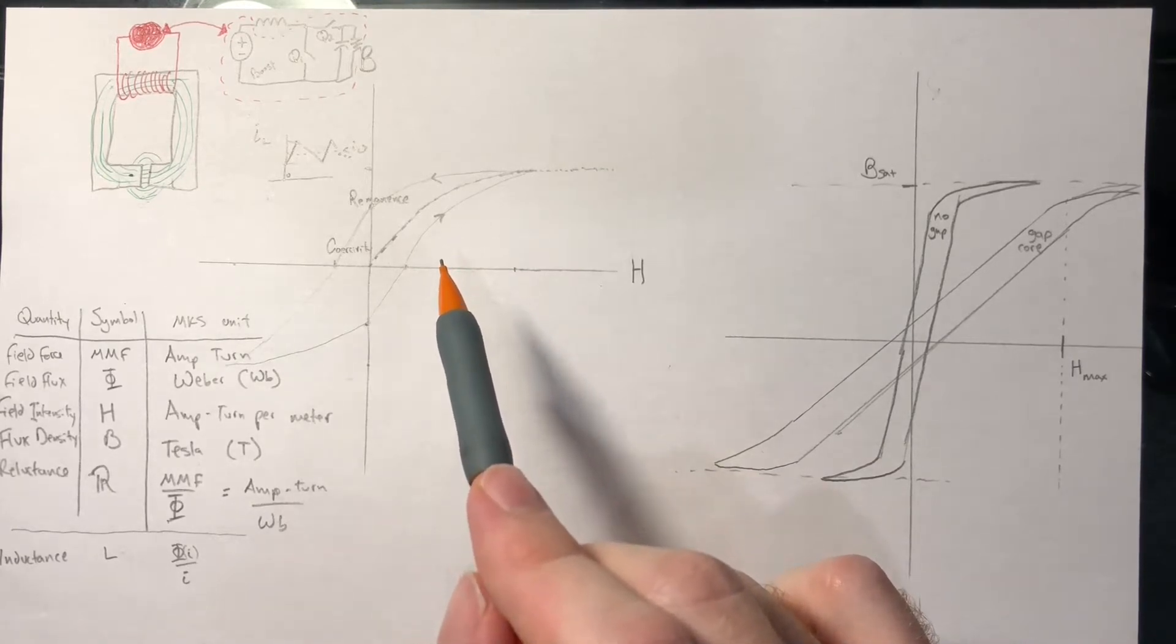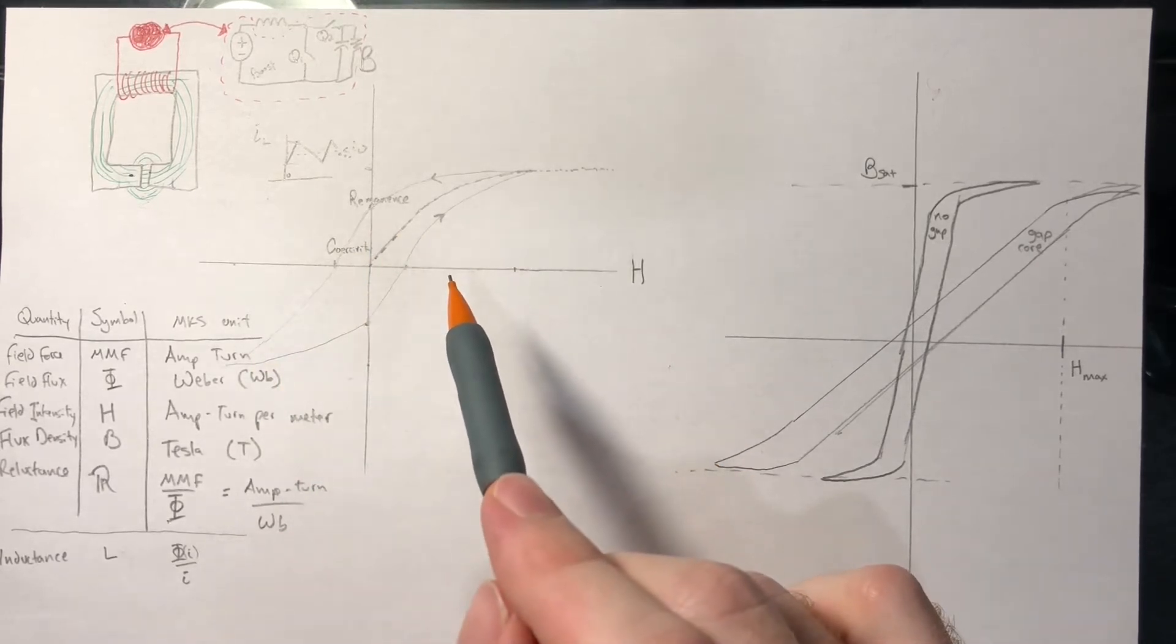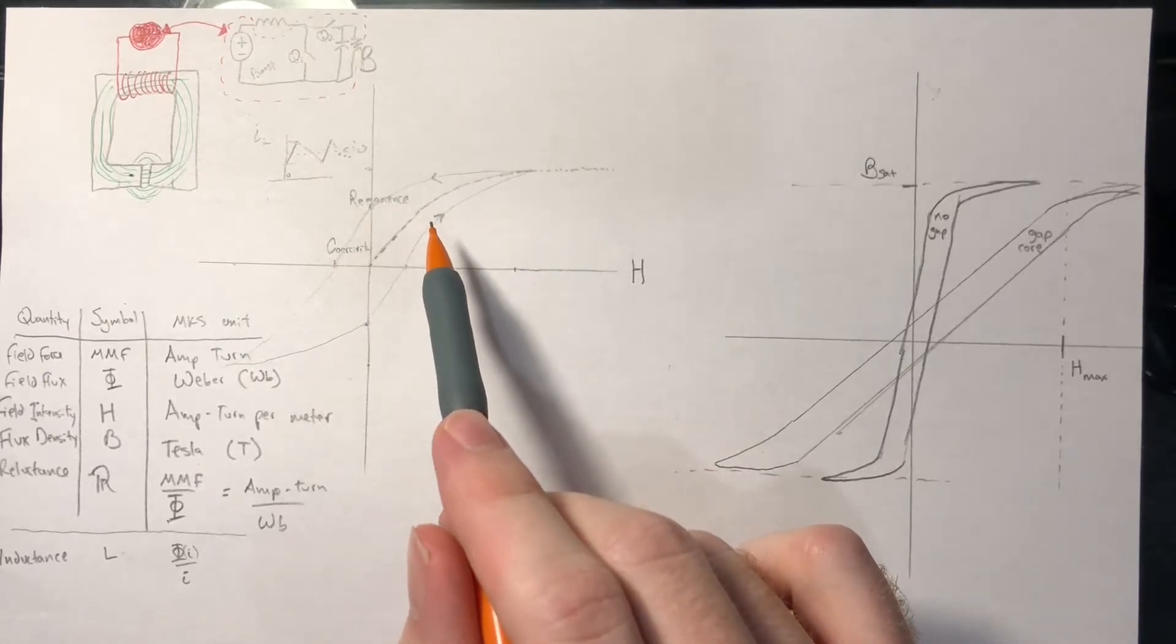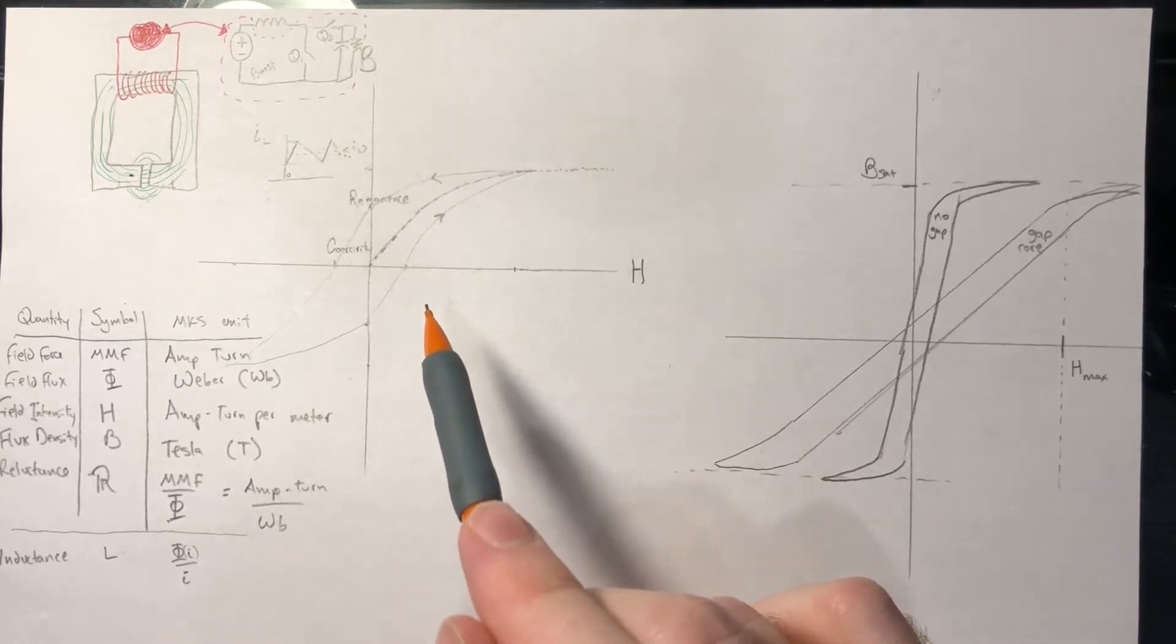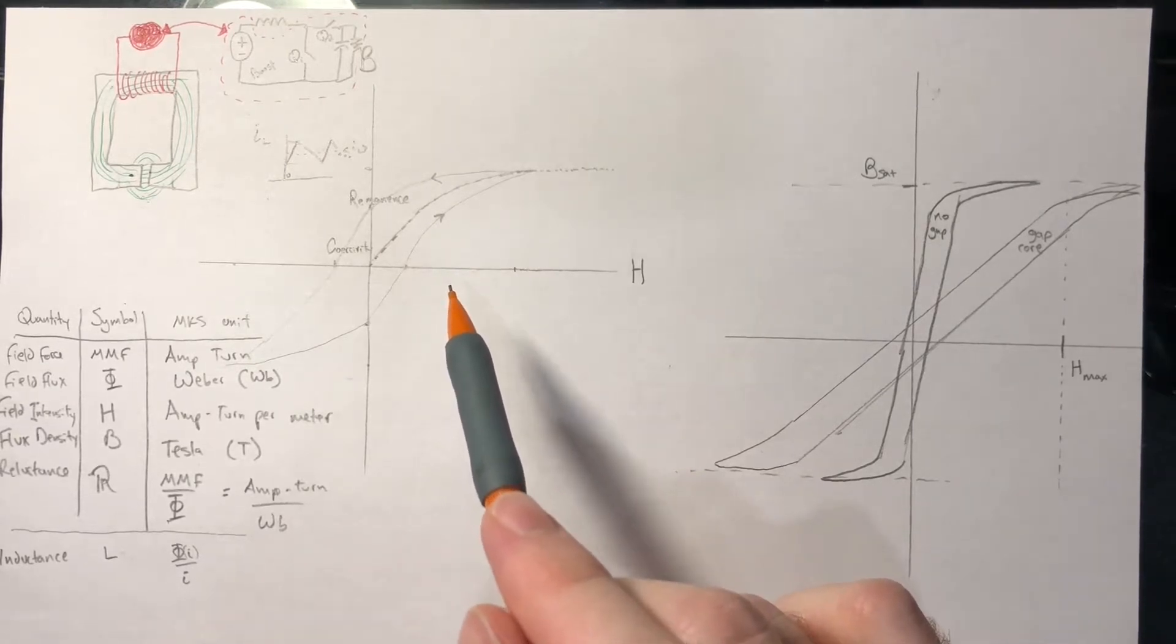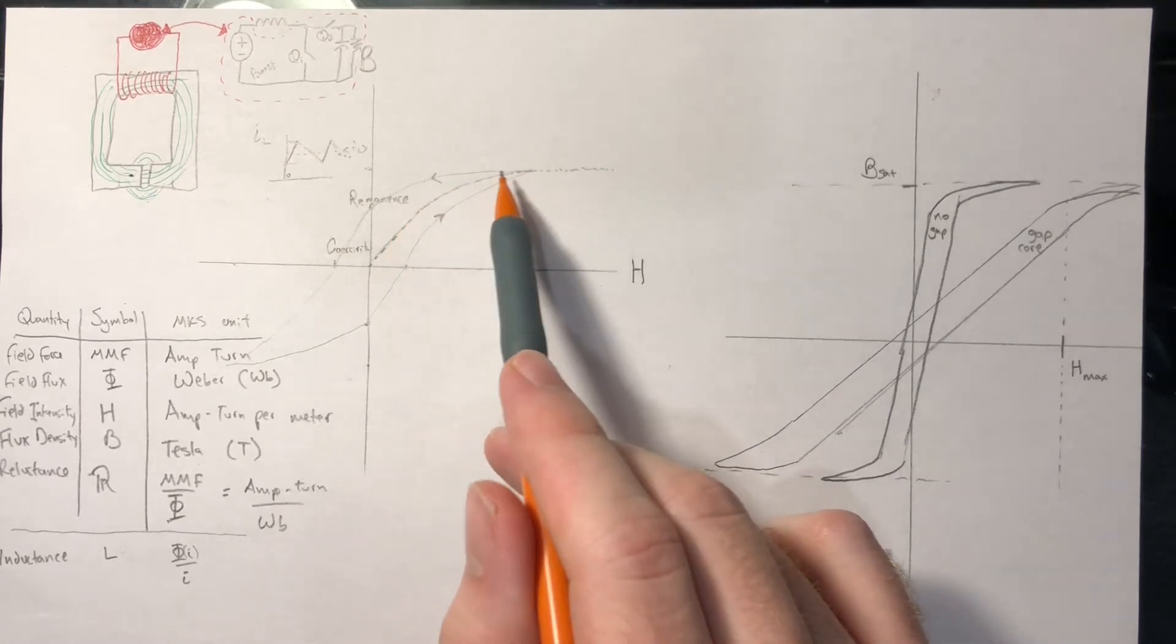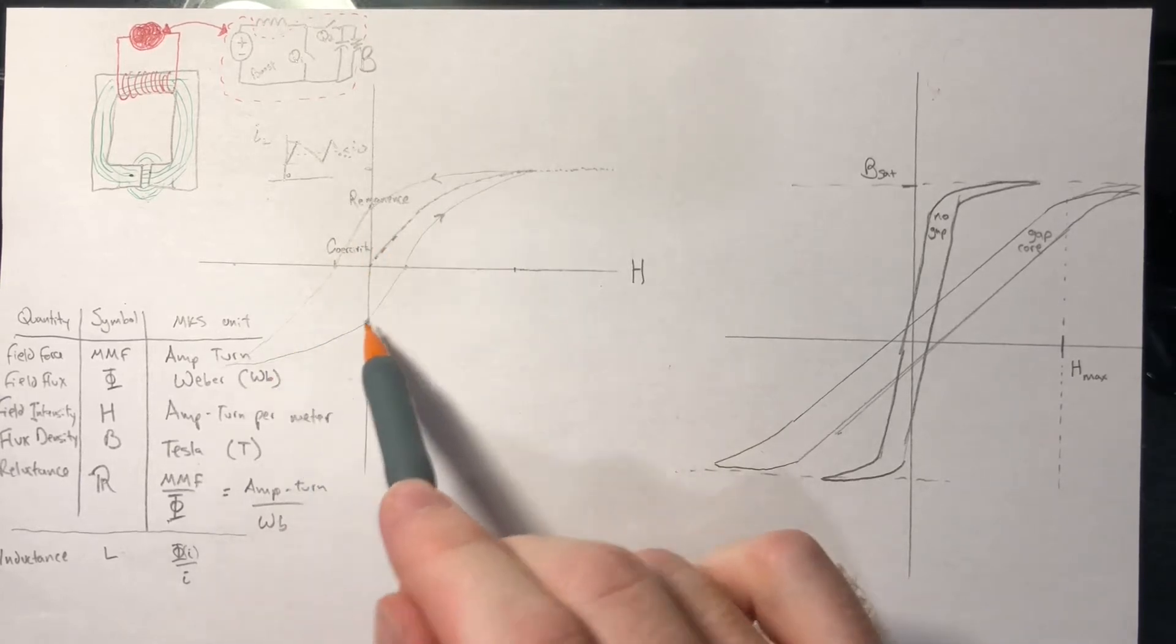Such materials that don't waste a lot of energy are called soft magnetic materials. Conversely, materials with large coercivity and remnants are called hard magnetic materials. Permanent magnet, you would want a large remnant so it stays in your fridge better. But for power electronics applications, you would want the smallest remnants, coercivity, and hysteresis possible.